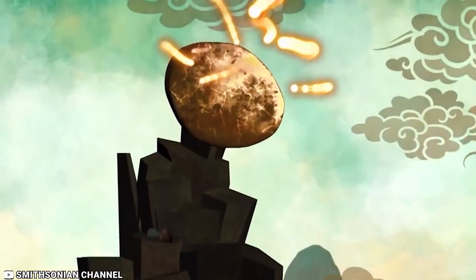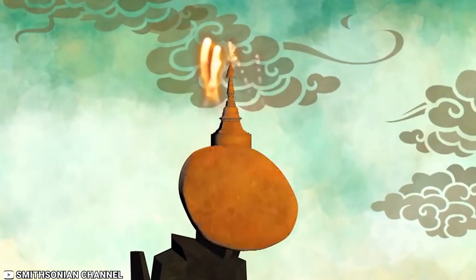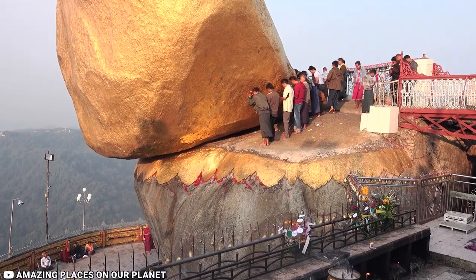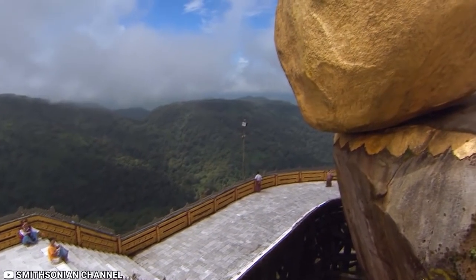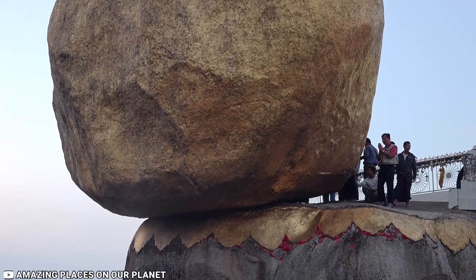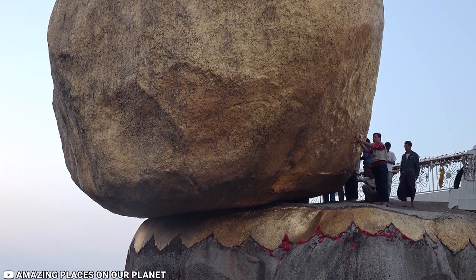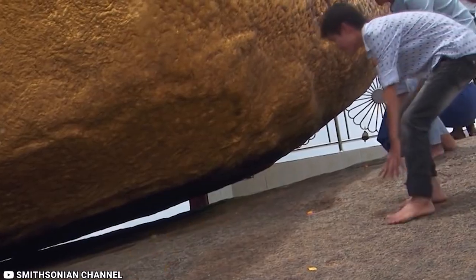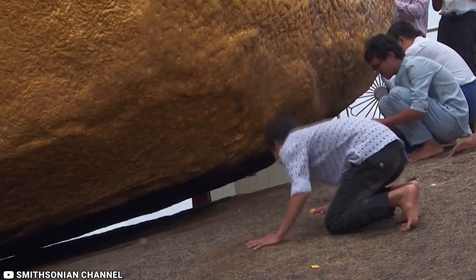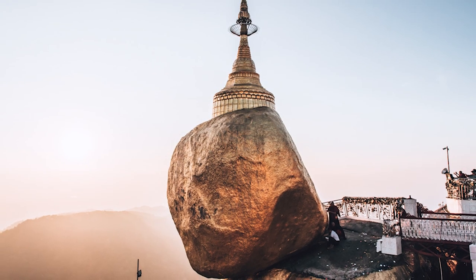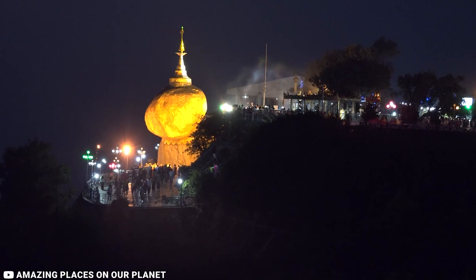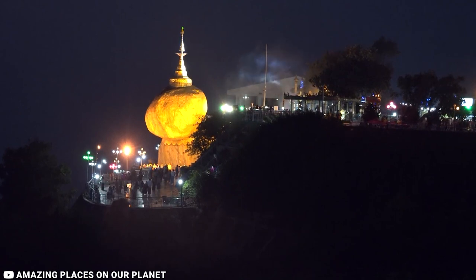It is said that a single strand of the Buddha's hair holds the structure together. In Burma, it is commonly said that seeing this rock that defies gravity is enough to convert any man to Buddhism. The Kyaiktiyo phenomenon is described by geologists as a volcanic accident. But to the locals, it is a larger-than-life sacred work, a miracle performed by Buddha himself that holds the rock up.